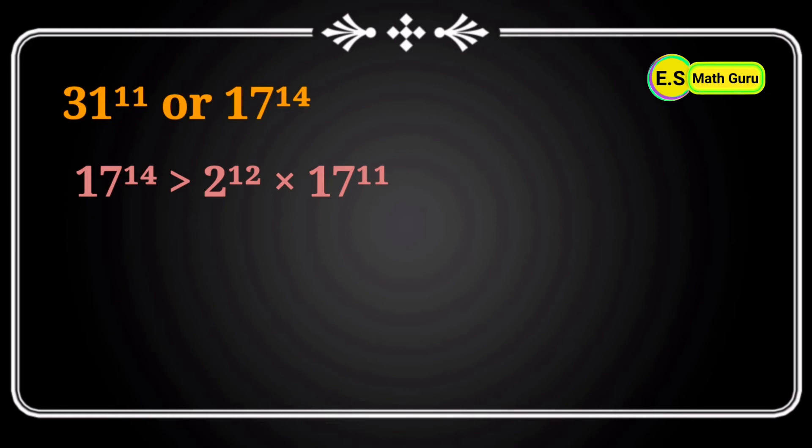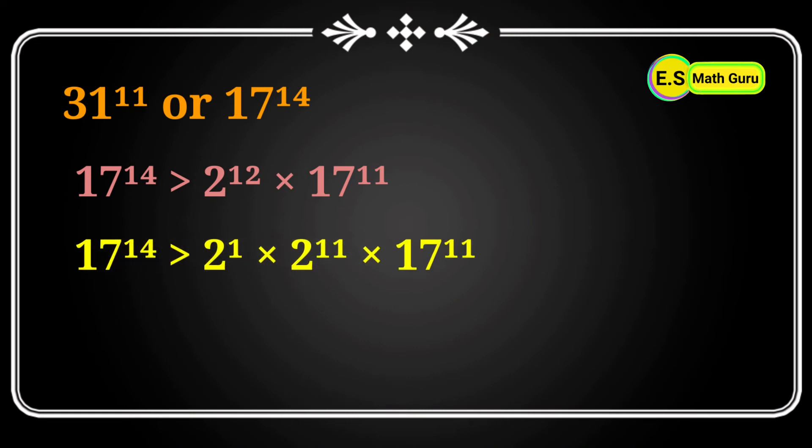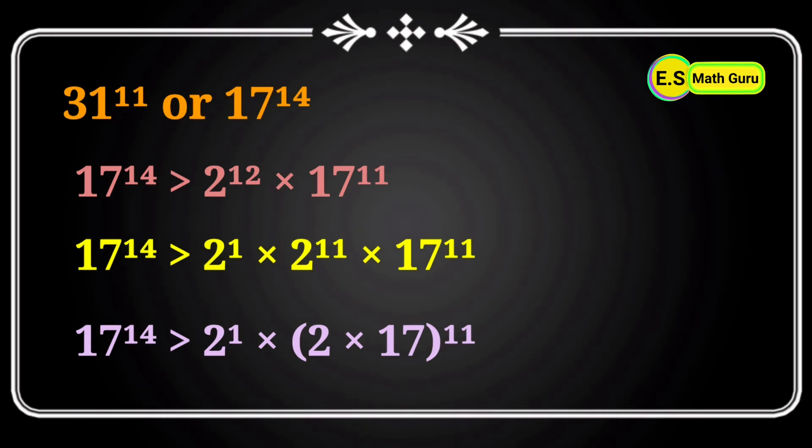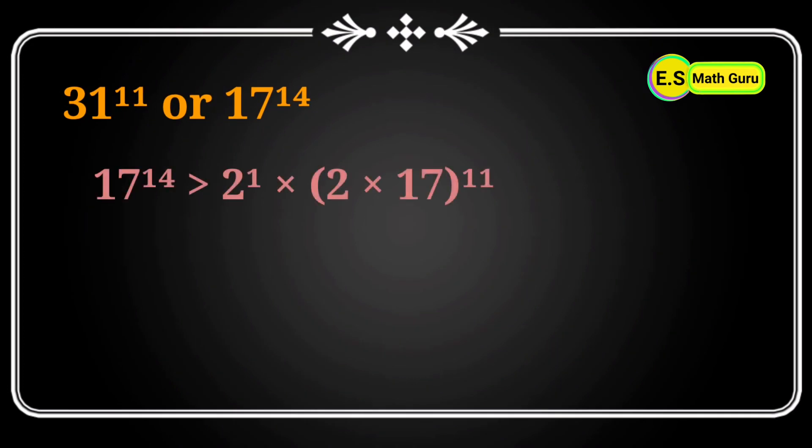Next, 2^12 can be written as 2^1 × 2^11. Then 2^11 × 17^11 can be written as (2 × 17)^11. By simplifying 2 × 17, we get 34^11.